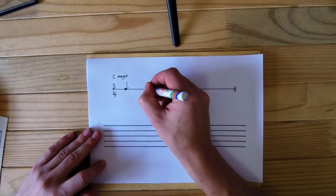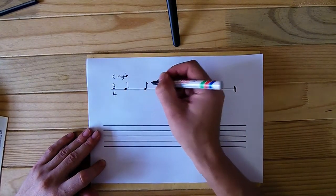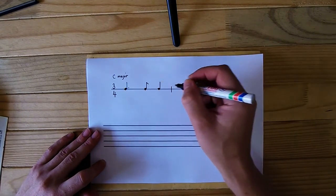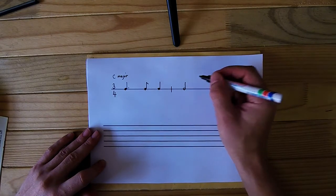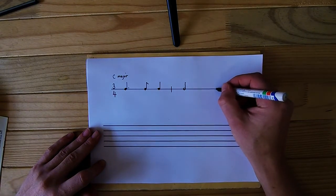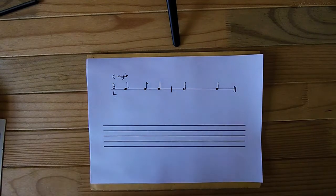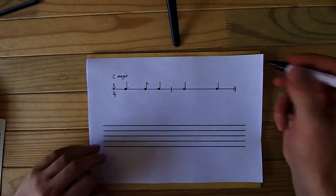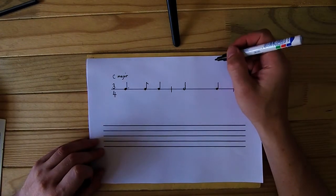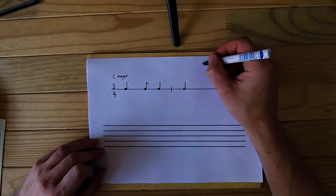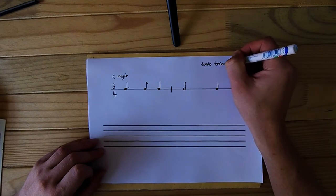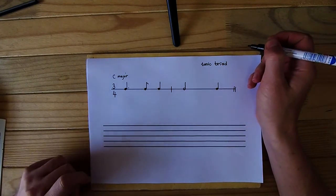A dotted crotchet, a quaver, another crotchet, and then they give you a minim, and then a dotted crotchet as well. What you need to now do is you need to go and write a rhythm. You may only use the notes from the tonic triad in the first question.